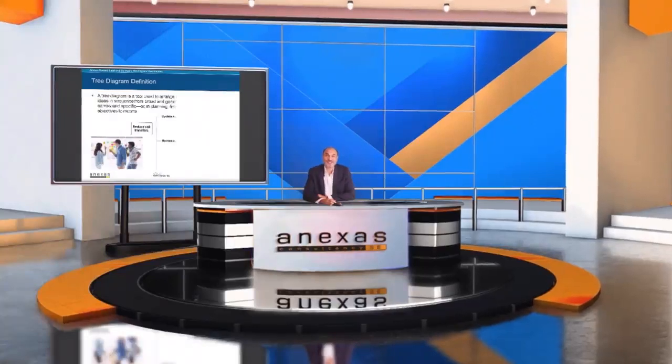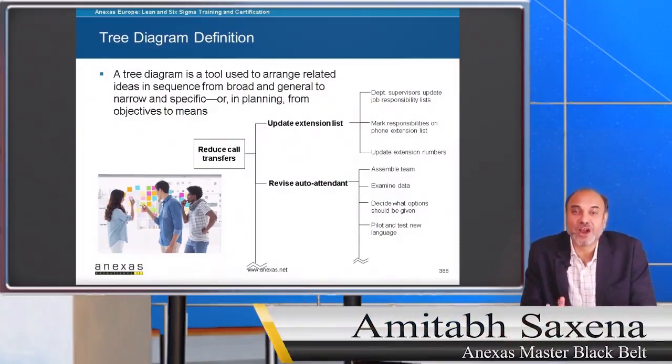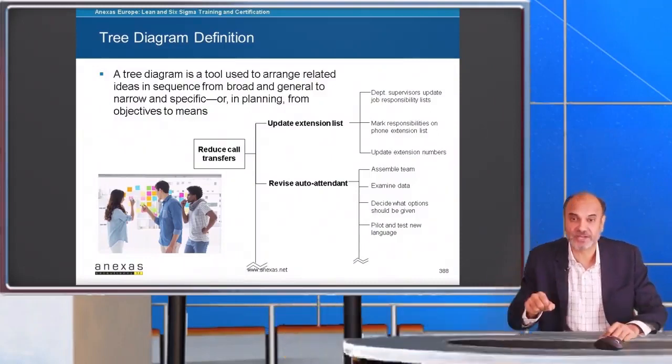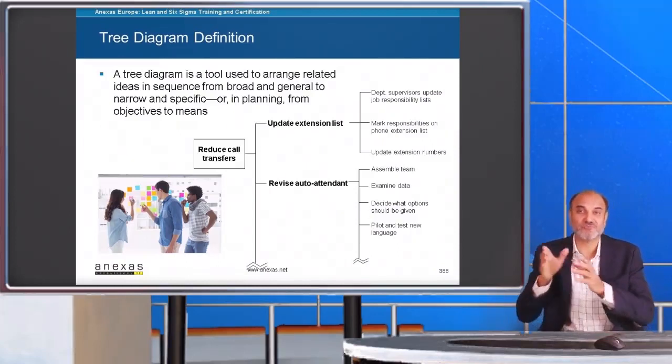Another planning tool is the tree diagram. A tree diagram is a tool used to arrange related ideas in a sequence from broad and general to narrow and specific, or in planning, from objectives to means.